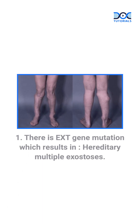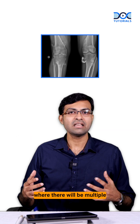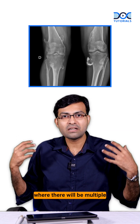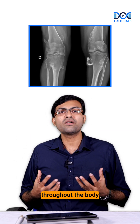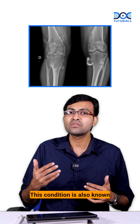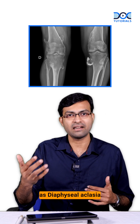There are four things that you have to know here. First, there is EXT gene mutation, which results in hereditary multiple exostosis, where there will be multiple osteochondromas throughout the body of the patient. This condition is also known as diaphyseal aclasis.